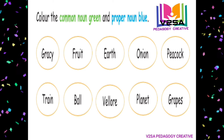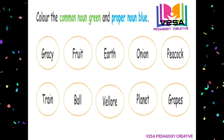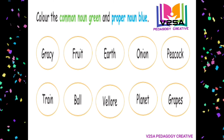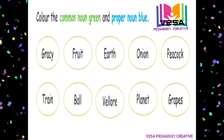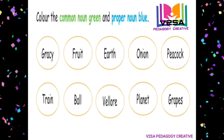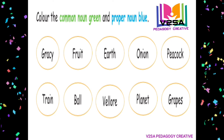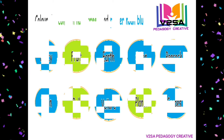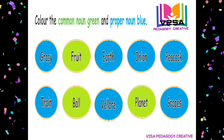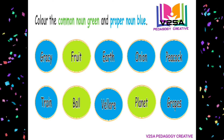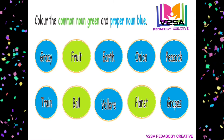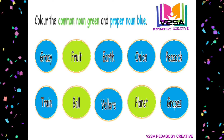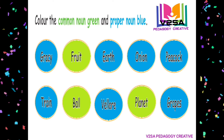May, onion, peacock, trine, ball, velour, planet, grapes. Common nouns are marked in green color and proper nouns in blue color — we will do it. Common noun: fruit, ball, planet — this is common noun. Earth, onion, peacock, trine, velour, grapes — this is common noun, blue color we will do it.